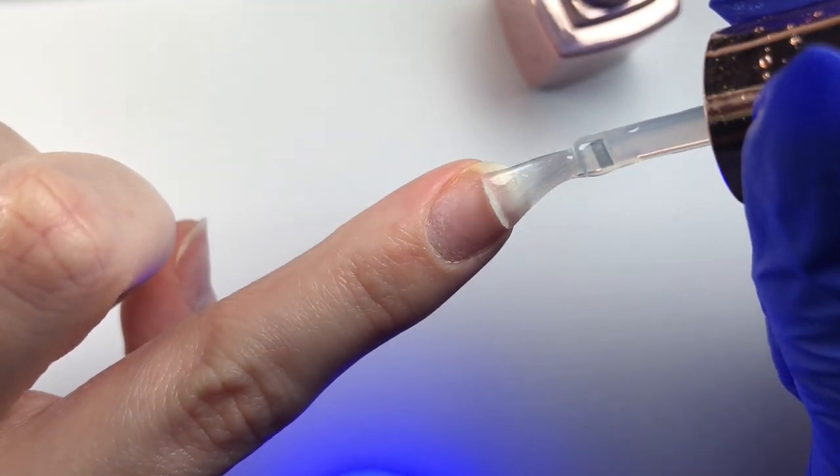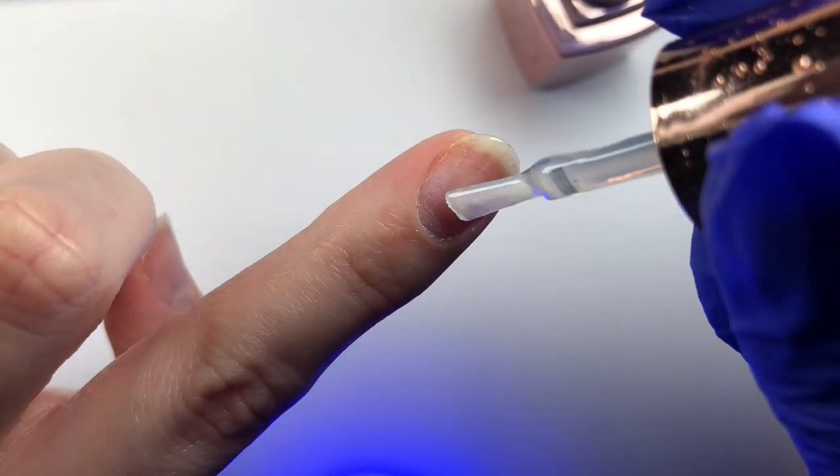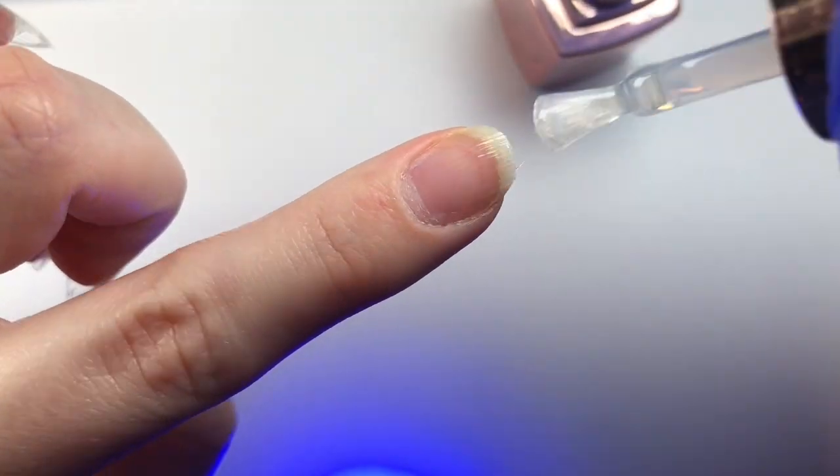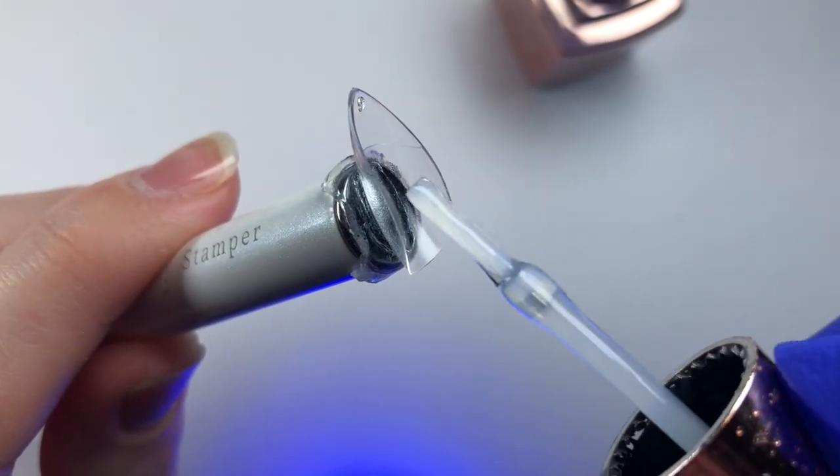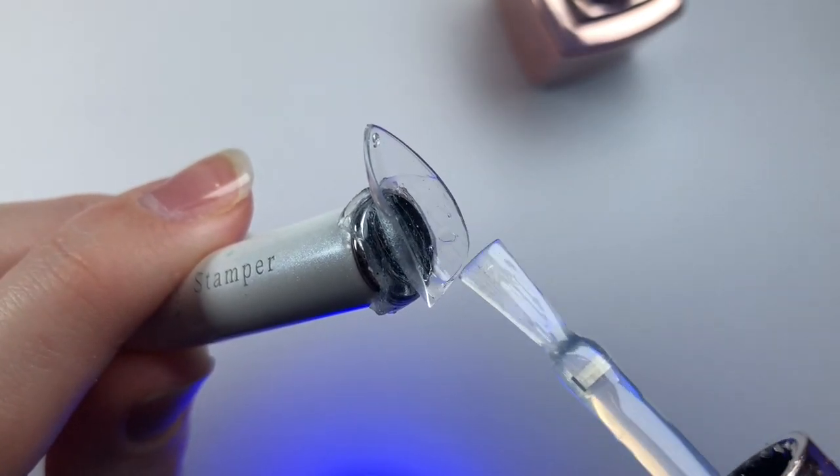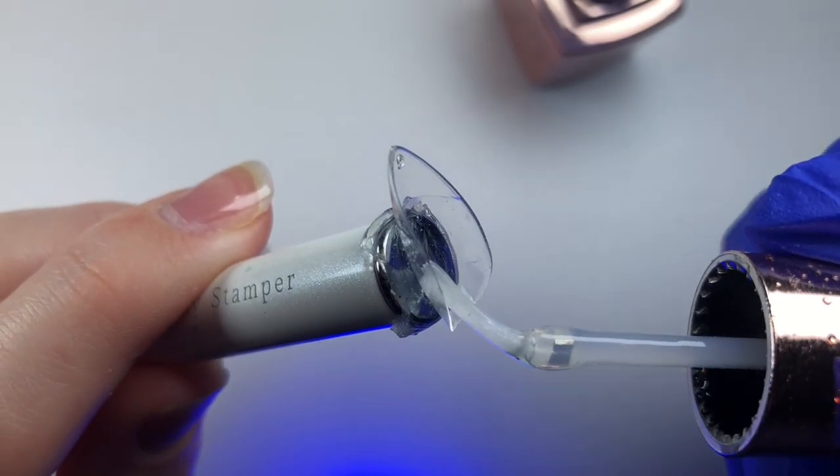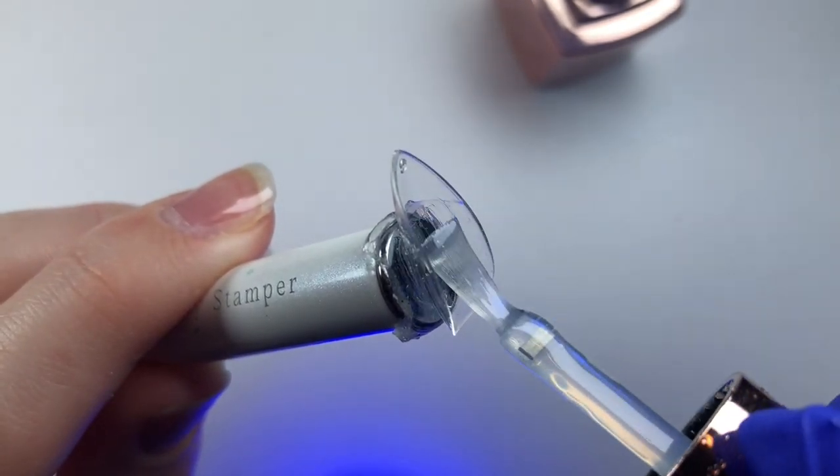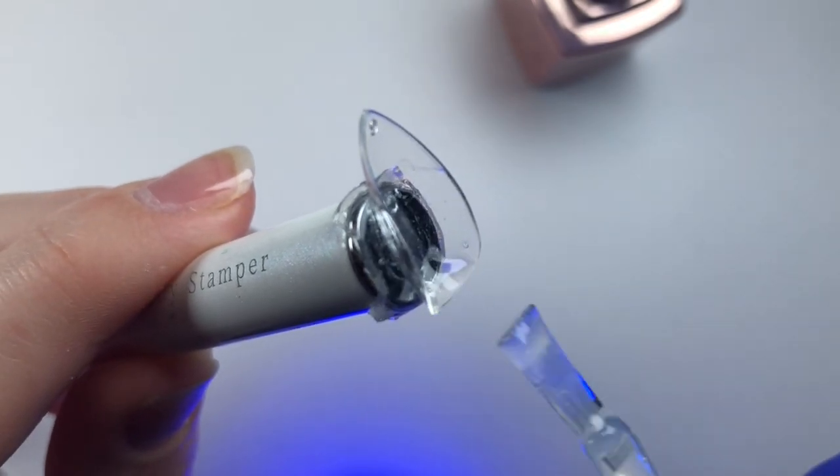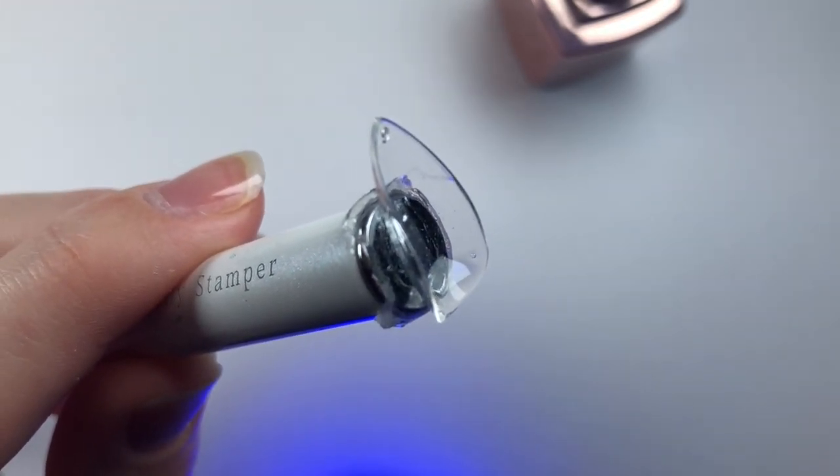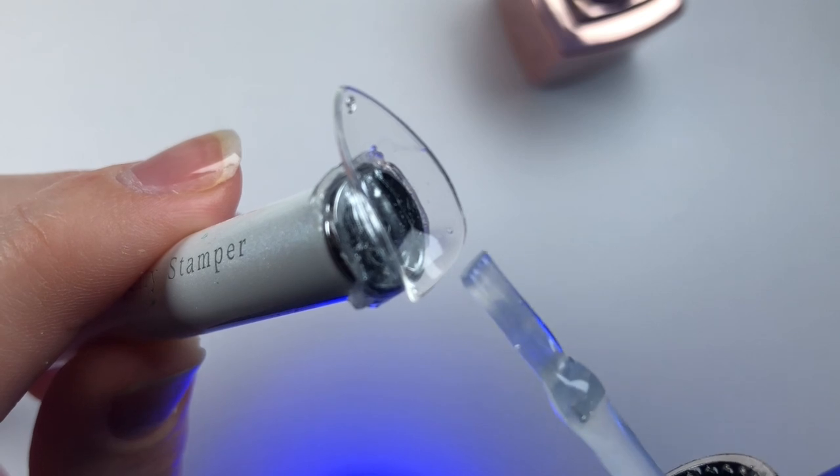One thing I noticed about applying with the peel off base is it is a lot thinner than a lot of other gels I've ever used to apply. So I did experience some bubbles. I just wanted to mention it because I don't think this is a flaw of the method. I think it's just a flaw of the gel I was using. Because you'll see at the end, I do have a couple or way more bubbles than I usually do. But I'm 99% sure it's just because of the gel and not like this technique.